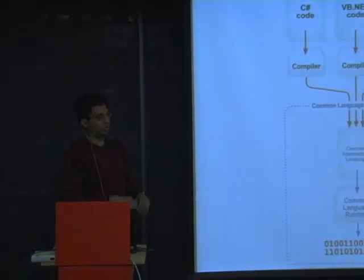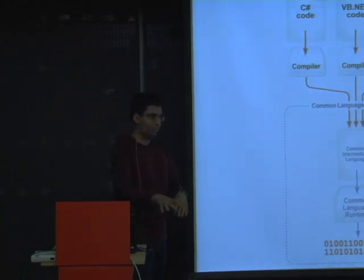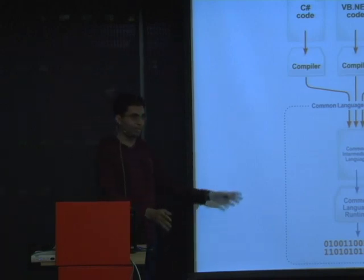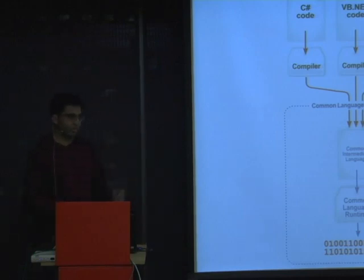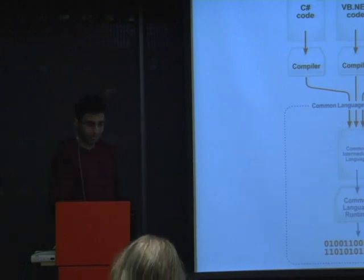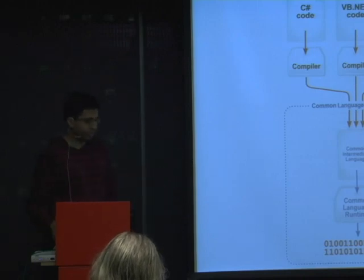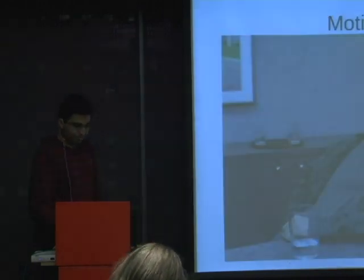There is an actual compiler that turns it into machine code. There is a runtime that takes care of allocating memory, getting rid of memory, moving stuff around, and trampolining between things. That's all the Common Language Runtime. And finally, you've got the machine code at the bottom.